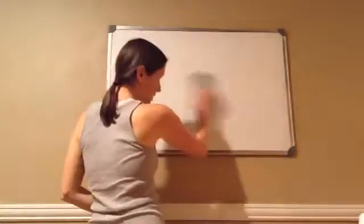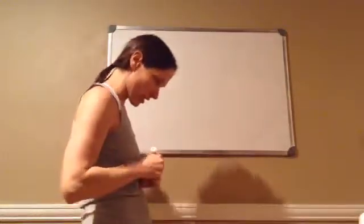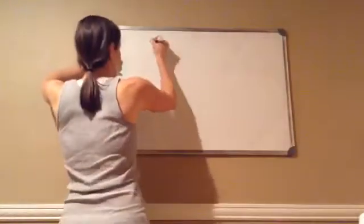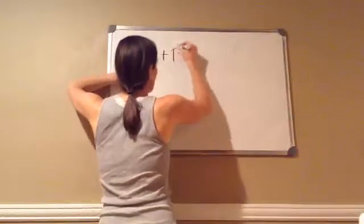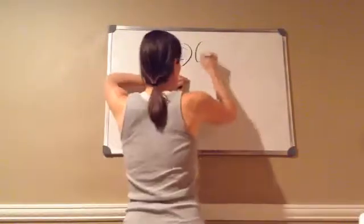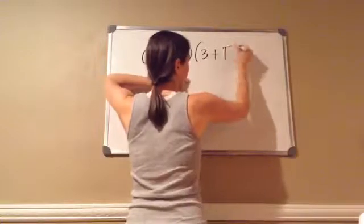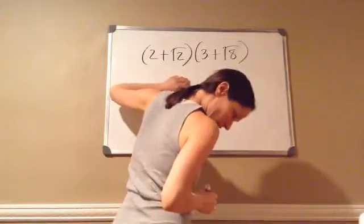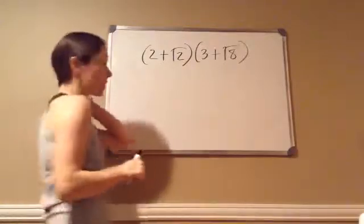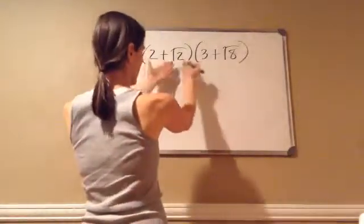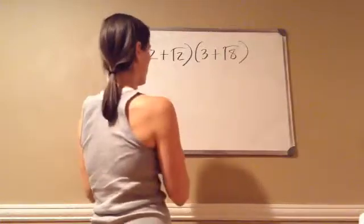Algebra 1, Lesson 112. This one is more on multiplication of radical expressions. It tells me to multiply, and then it gives me a problem. 2 plus square root of 2, times 3 plus square root of 8. So this works like any other type of problem, but we're adding square roots in there.